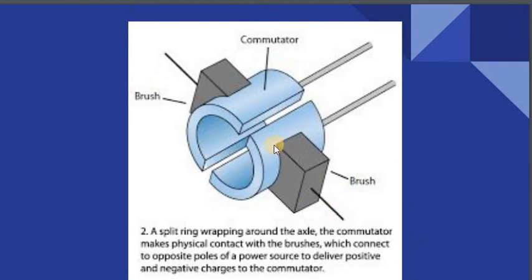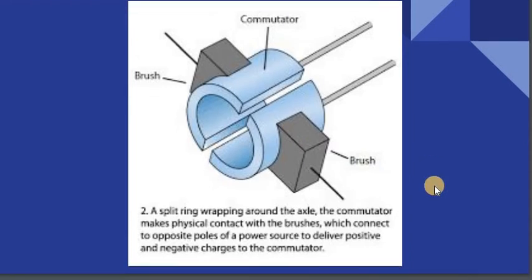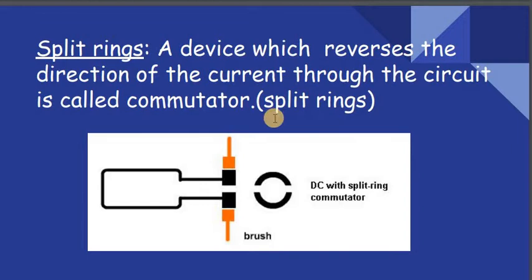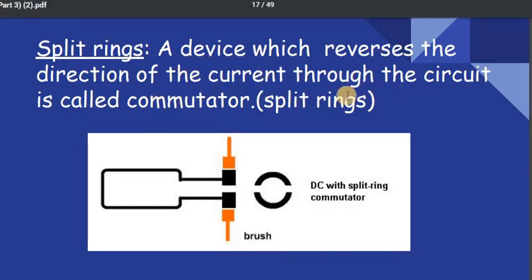The commutator, also called split rings, is a device which reverses the direction of the current through the circuit. The split rings or commutator are shown here, with the carbon brushes in orange, and this is attached to the armature.